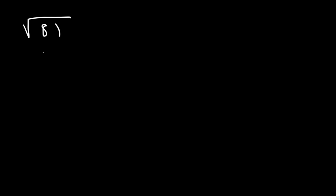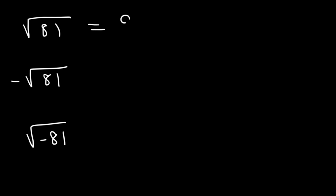Try these three: the square root of 81, negative root 81, and also the square root of negative 81. The square root of 81 is positive 9. Negative root 81 is negative 9. And the square root of negative 81 is going to be 9i.